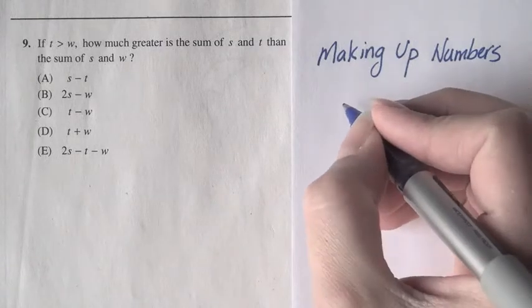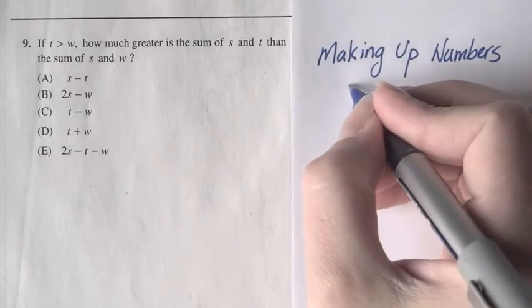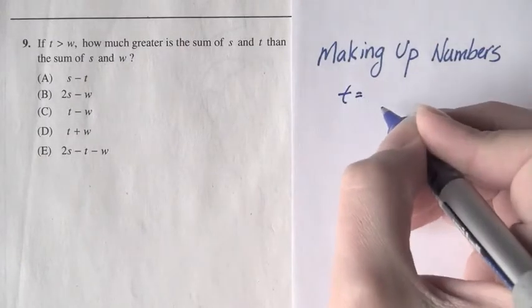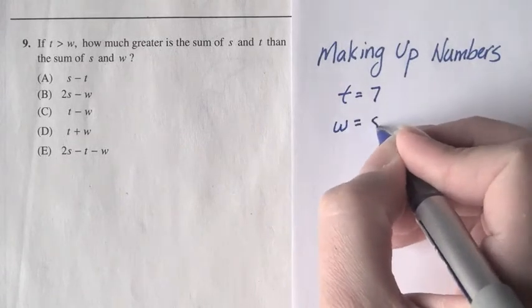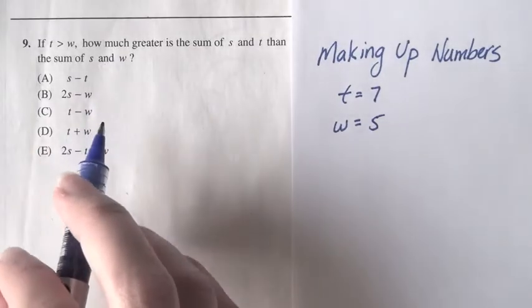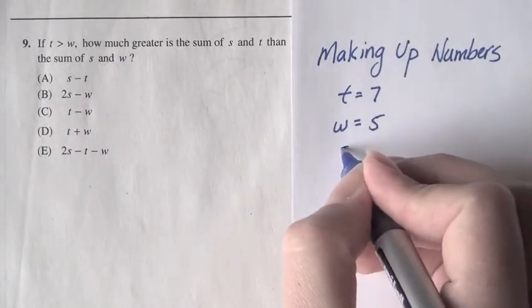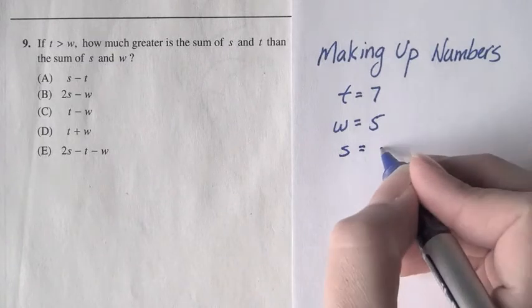Okay, so let's make up numbers. All we know is that t has to be greater than w. So I'll say t is equal to 7, and w is equal to 5. Okay, now we need a number for s, and we can pick anything in the world for s, but I will pick 4.